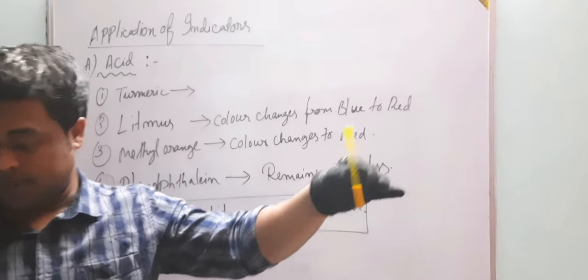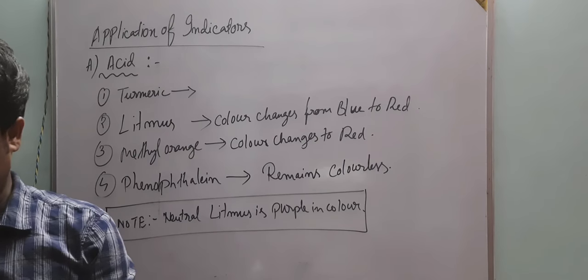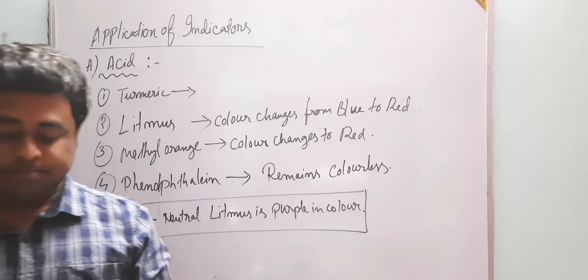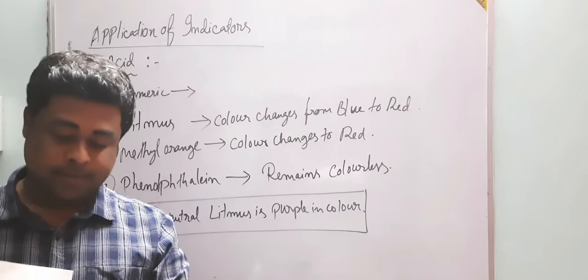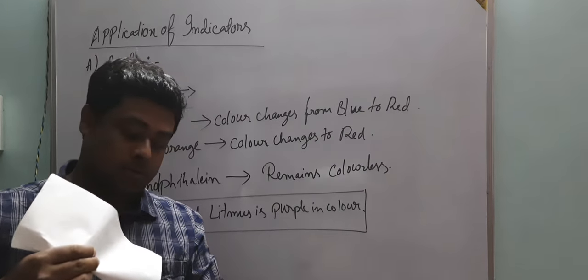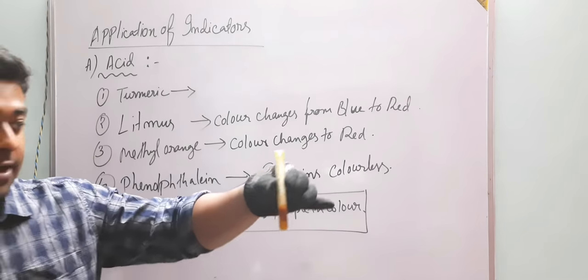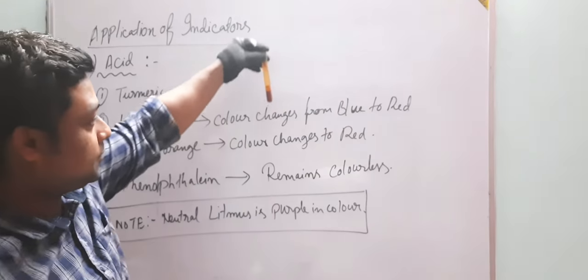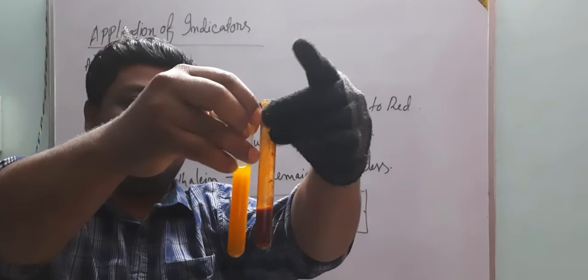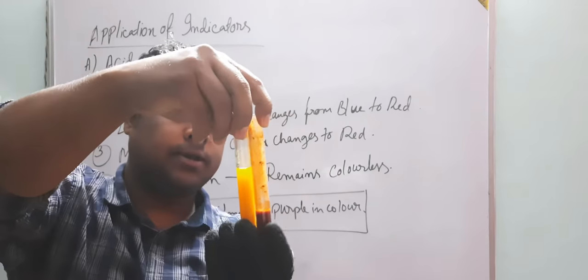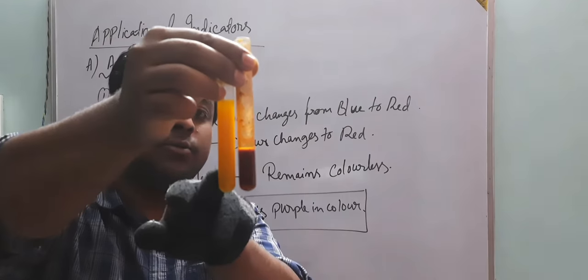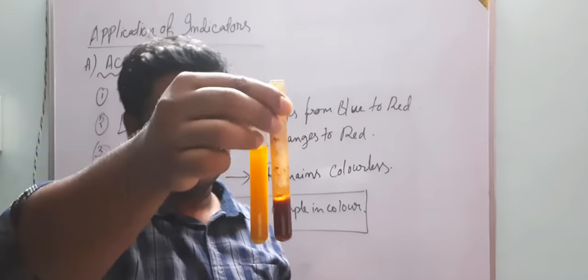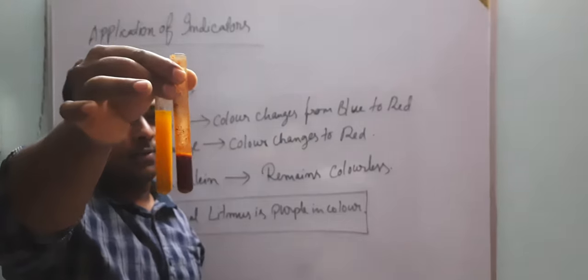Next I am taking the other test tube, test tube B, which contains the same turmeric solution. Here I am going to add some pellets of base — that is baking powder mixed with detergent. As soon as I have added the base, you can see the color is changing — it is now red, not yellow. Comparing with the previous one: the previous test tube was yellow, but this is now red. So we can conclude that when acid is added to turmeric powder, the color does not change and remains yellow, but when base is added, the color changes from yellow to red. This is a natural indicator.